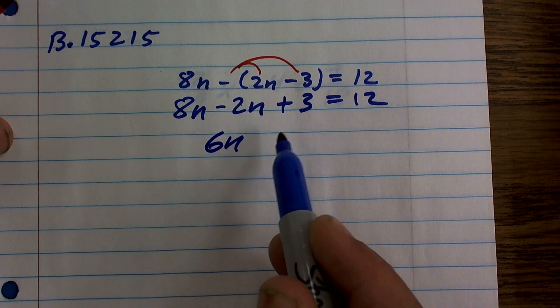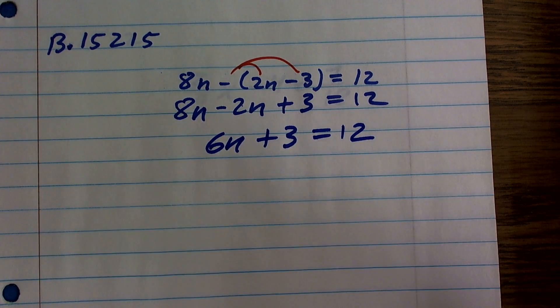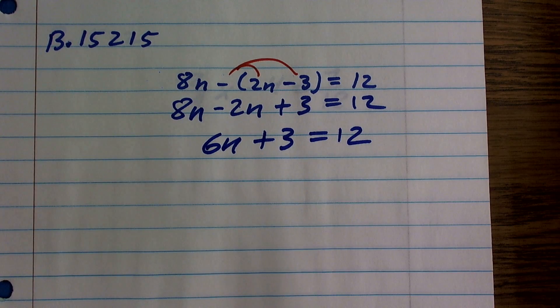8n minus 2n is 6n plus 3 equals 12. Now we have a lovely two-step equation, and it's a pretty basic one, too.